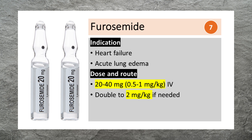Furosemide is used to treat heart failure and acute lung edema. It can be given as 20-40 mg IV; you may double the dose if needed.